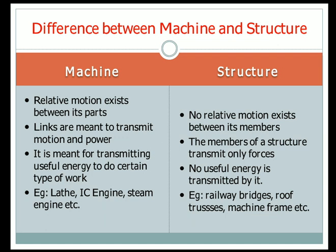A machine is used to transmit energy and do useful work. But in the case of a structure, no useful work is done — it simply transfers loads from the upper portion to the lower portion, such as the ground.